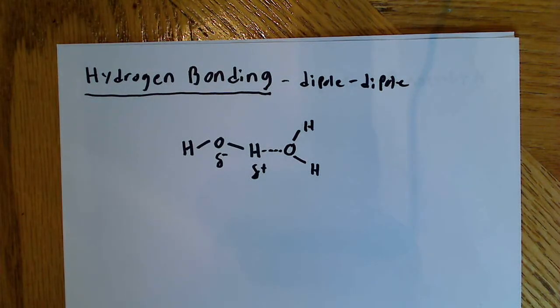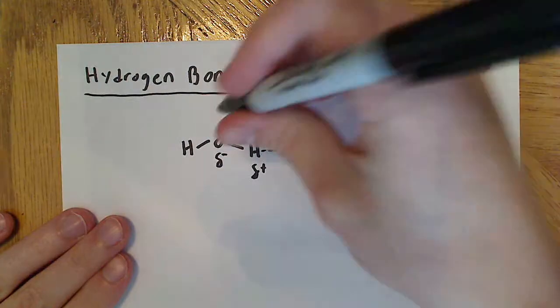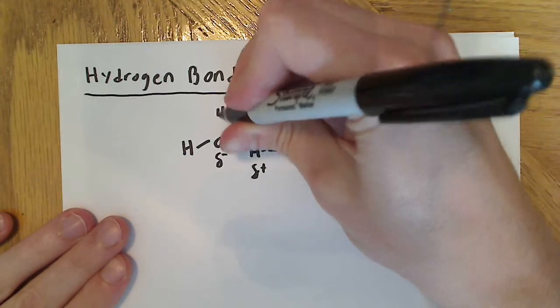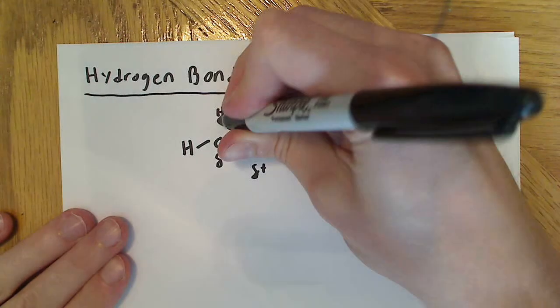So that's what we're talking about when we're talking about differences in electronegativity between the O and the H. And one of the unique things about water is you can do this with four molecules. You can form four hydrogen bonds, so this is kind of cool.